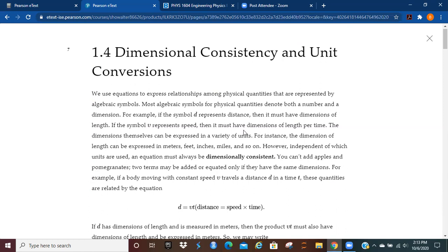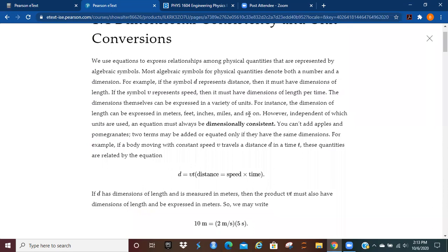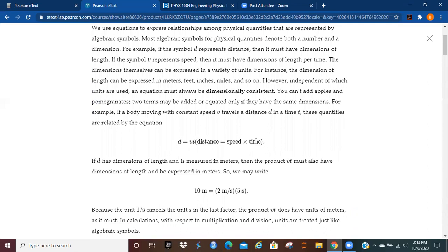If the symbol V represents speed, then it's got to have dimensions of length per time. How that's expressed depends on the context of the situation. But independent of whatever units are used, the equation must be dimensionally consistent. In other words, two terms may be added or equated only if they have the same dimensions.